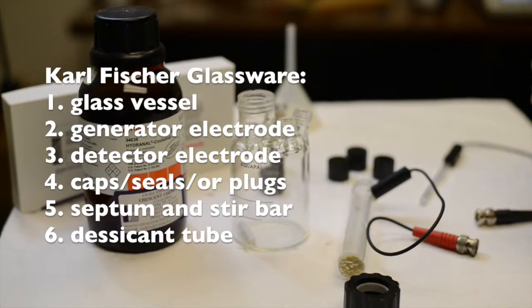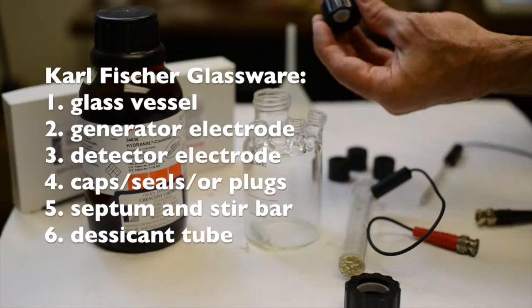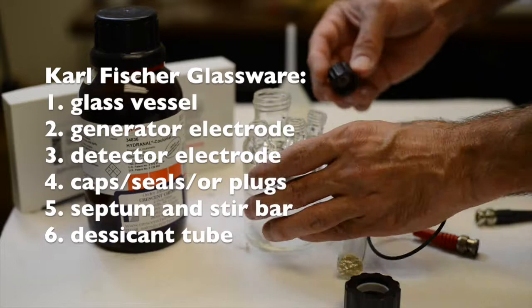Carl Fischer glassware is composed of a glass vessel for holding the reagents and the sample and generally has three to four ports on top for holding the detector electrode, the generator electrode, and for also introducing more reagents and injecting the sample.